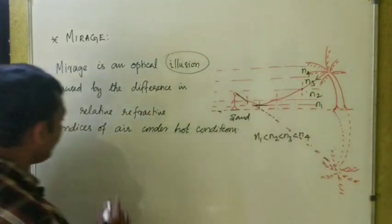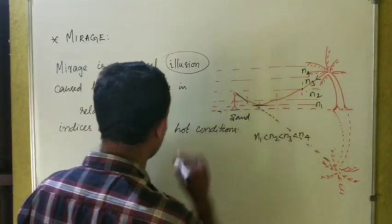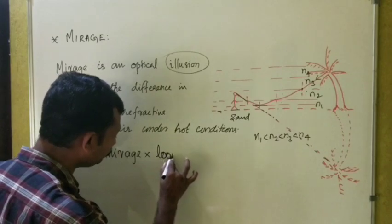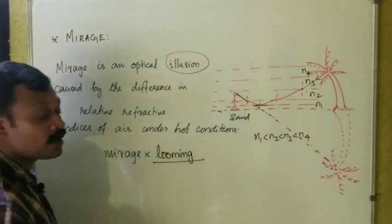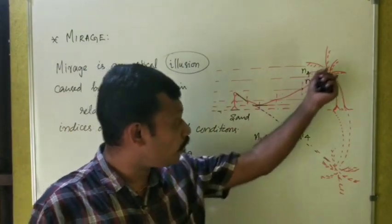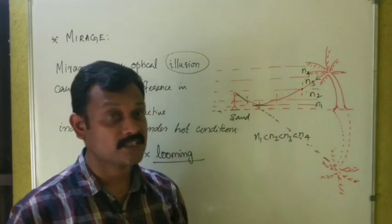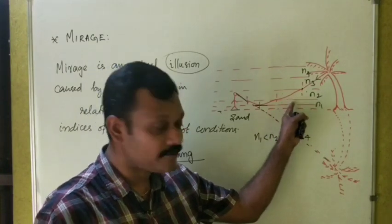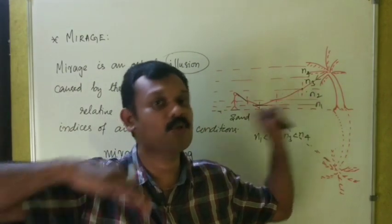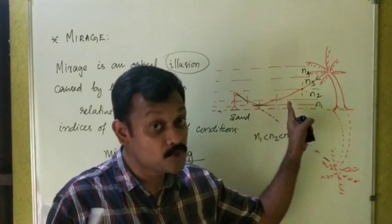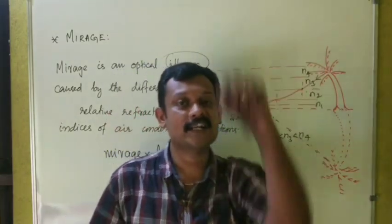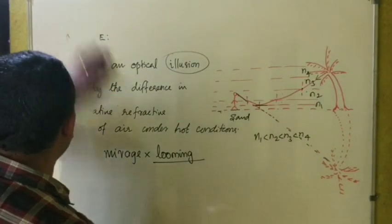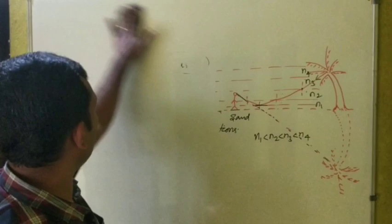The opposite of mirage is looming, which is seen under cold conditions. Under cold conditions the layers of air closer to the ground have greater refractive index because cooling increases refractive index. As we go upward the refractive index decreases, producing the opposite effect to mirage. This opposite effect is called looming.